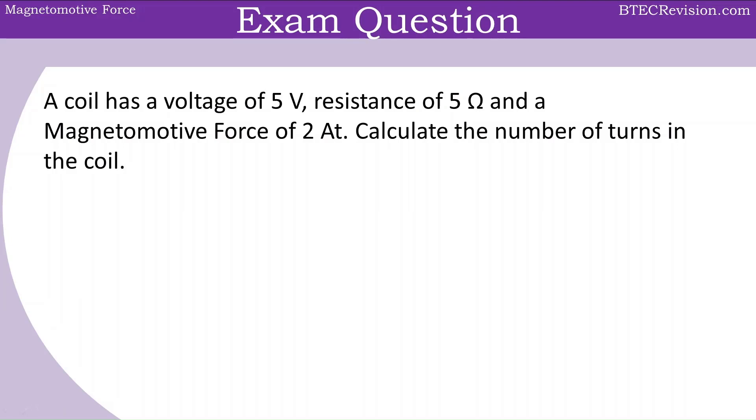We can start by writing down our equation Fm equals NI. Since it's asking to calculate the number of turns, we can rearrange this for N which is Fm divided by I. We have our Fm value which is 2, but we don't have I. But we do have voltage and resistance, so we can think of an equation that will link these together.